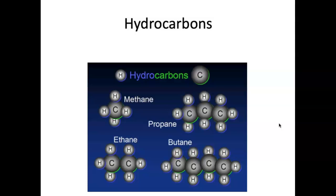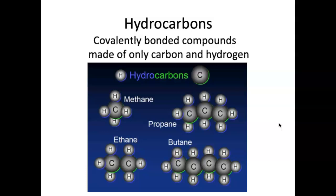A hydrocarbon is anything that contains hydrogen and carbon, and these are going to be the backbone of everything we discuss in this introduction to organic chemistry. Remember the concept of covalent bonding — all these carbons and hydrogens are covalently bonded. So we have methyl, ethyl, propyl, and butyl. I recommend memorizing these four prefixes now. My mnemonic is: 'Monkeys Eat Peeled Bananas.'